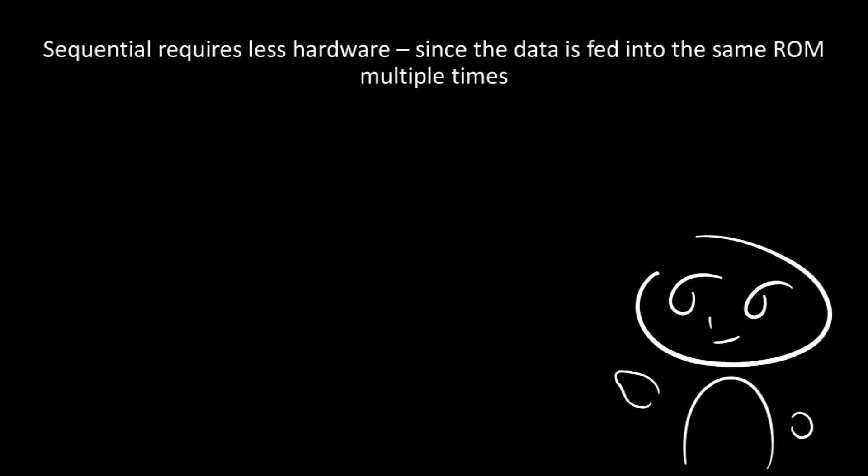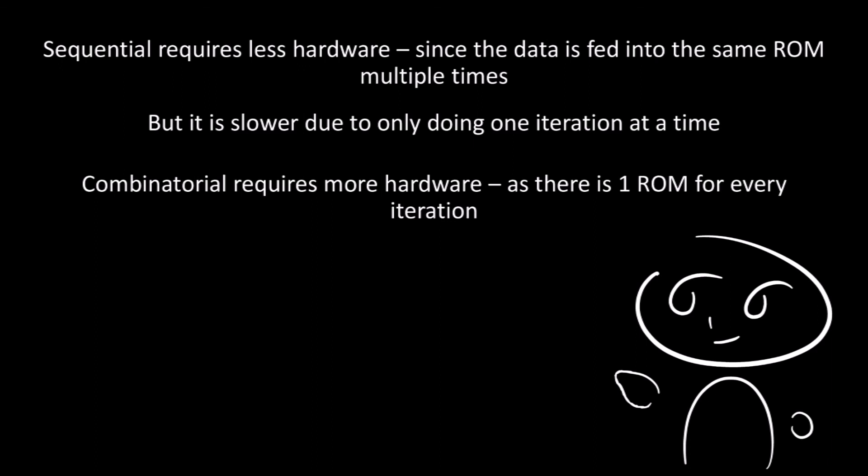So, in summary, sequential requires less hardware since the data is fed into the same ROM multiple times. But it is slower due to only being able to do one iteration at a time. Combinatorial, on the other hand, requires more hardware since there's one ROM for every iteration. But it is slightly faster since it can do some of the iterations in parallel.